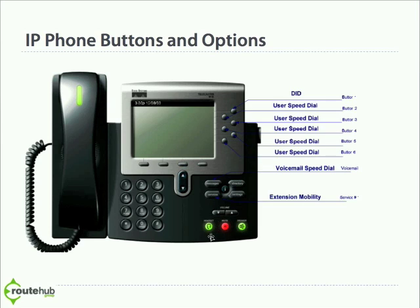These three buttons: the first one enables the headset — you may have a Plantronics headset connected to your phone and can press this button to activate it. If you need to mute a call, simply press the button in the middle. The last button enables the speakerphone capability. The soft key buttons point to particular options presented on the LCD screen, such as redial, new call, do not disturb, call forward, and so on.